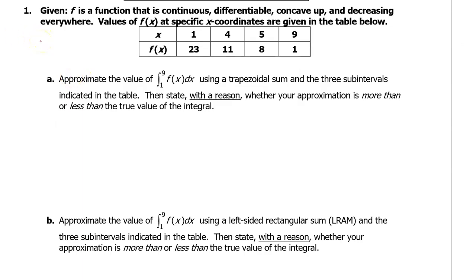Number one. Given f is a function that is continuous, differentiable, concave up, and decreasing everywhere. Values of f of x at specific x coordinates are given in the table below. Part A: approximate the value of the integral of f of x from one to nine using a trapezoidal sum, and the three subintervals indicated in the table. Then state with a reason whether your approximation is more than or less than the true value of the integral.